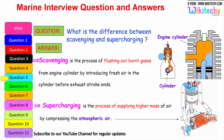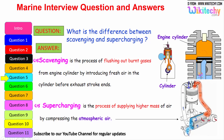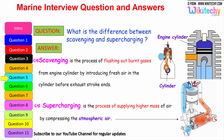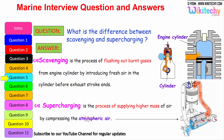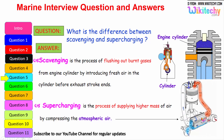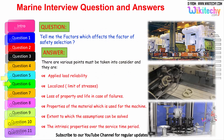Let us move on to the next question: what is the difference between scavenging and supercharging? Scavenging is the process of flushing out the burnt gases from the engine cylinder by introducing fresh air in the cylinder before the exhaust stroke ends. Whereas supercharging is the process of supplying higher masses of air by compressing the atmospheric air — high pressure air is injected into the cylinder.